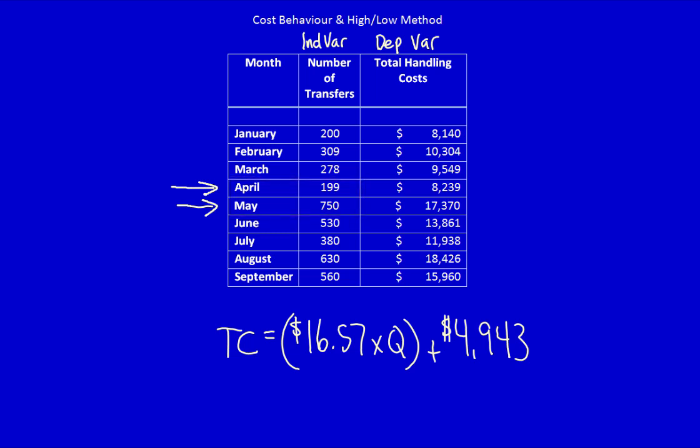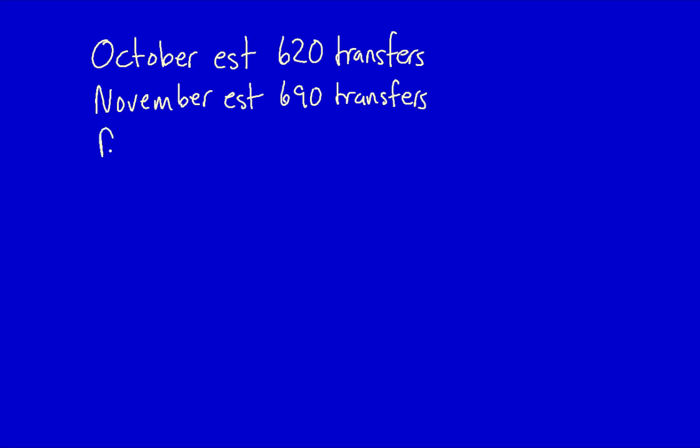Can we use this function to determine costs, say, in the upcoming quarter, October, November, December? Yes, we can. Let's see how it's done. Say we believe that in October there will be 620 transfers, and in November we estimate there will be 690 transfers, and in December we estimate there will be 735 transfers. Notice that each of these three amounts are within the relevant range.